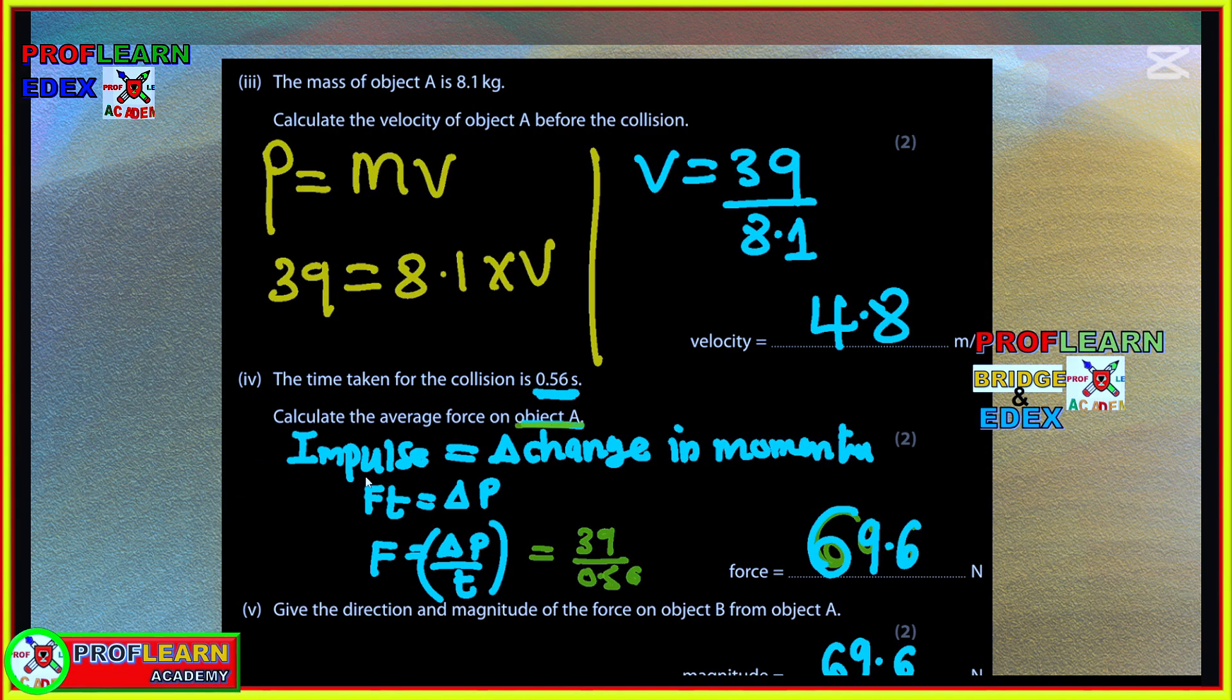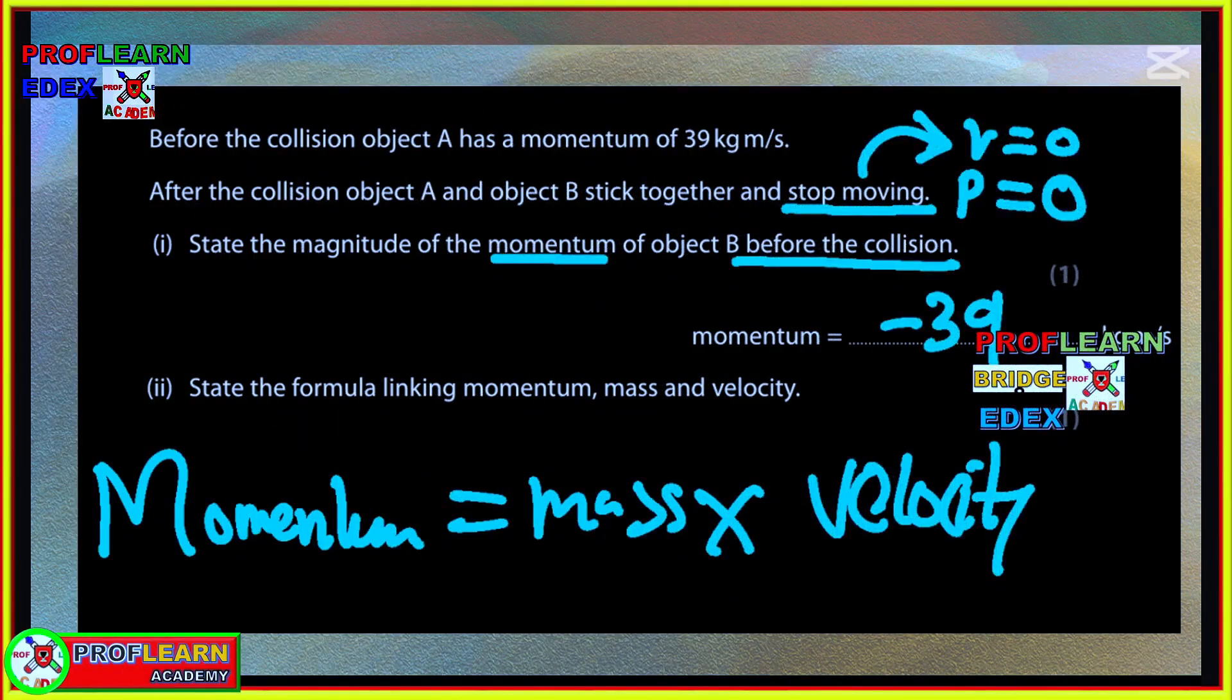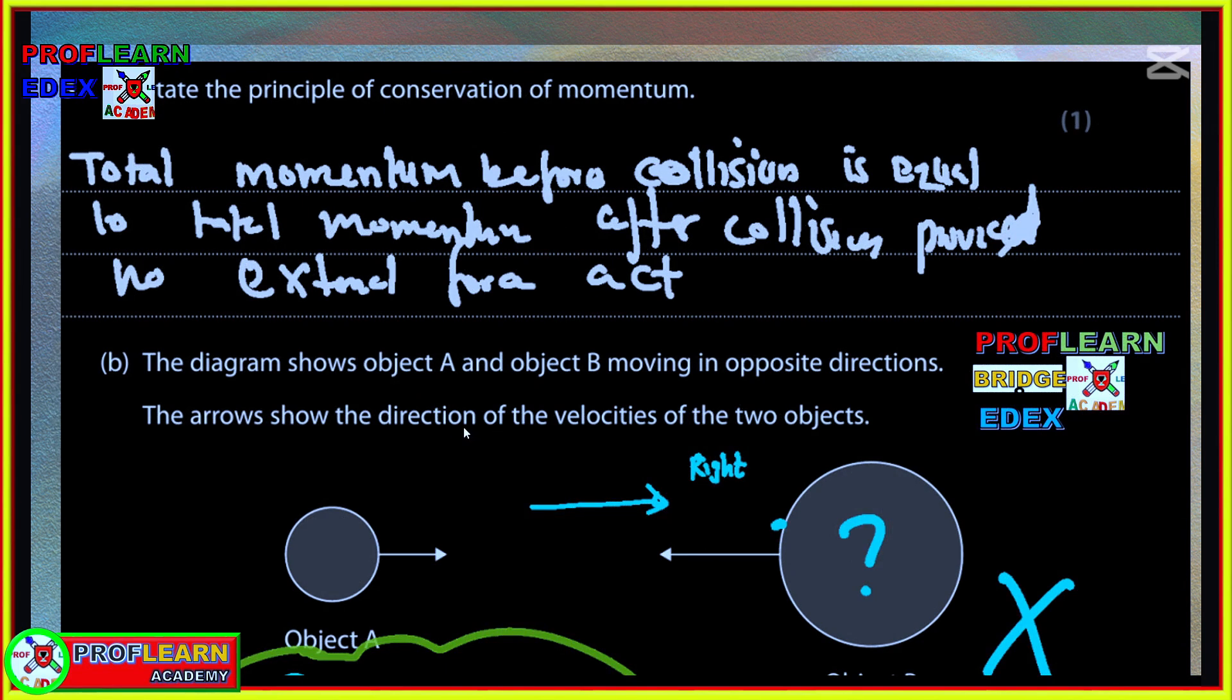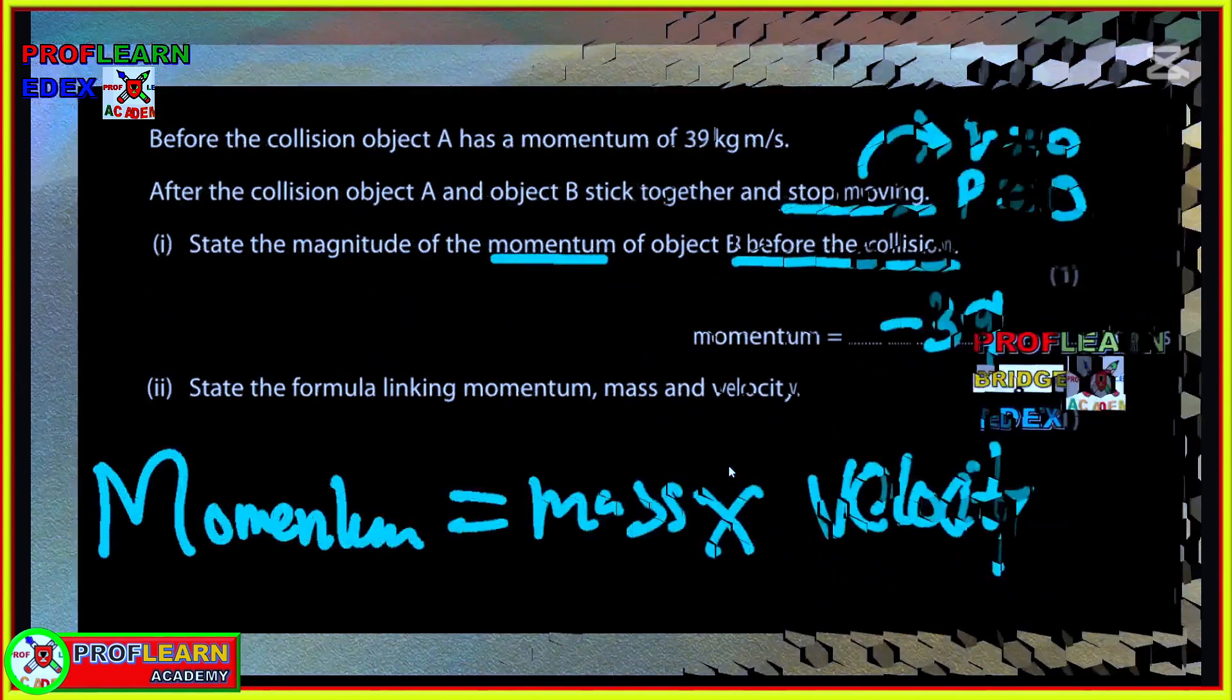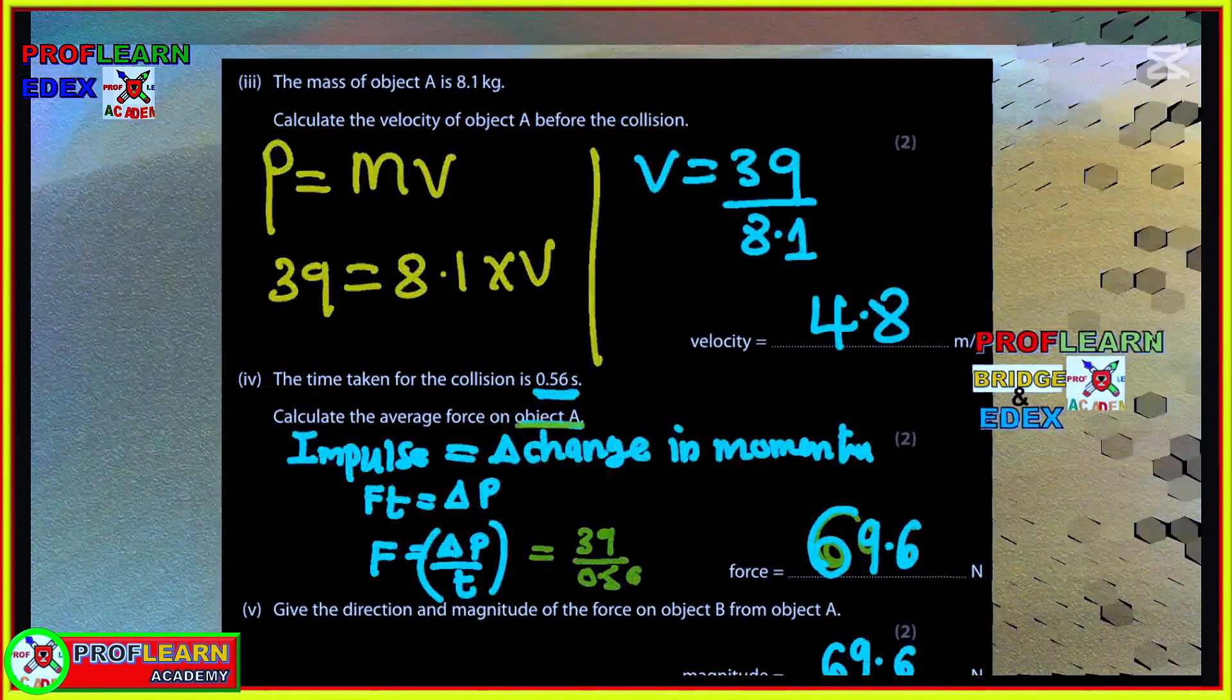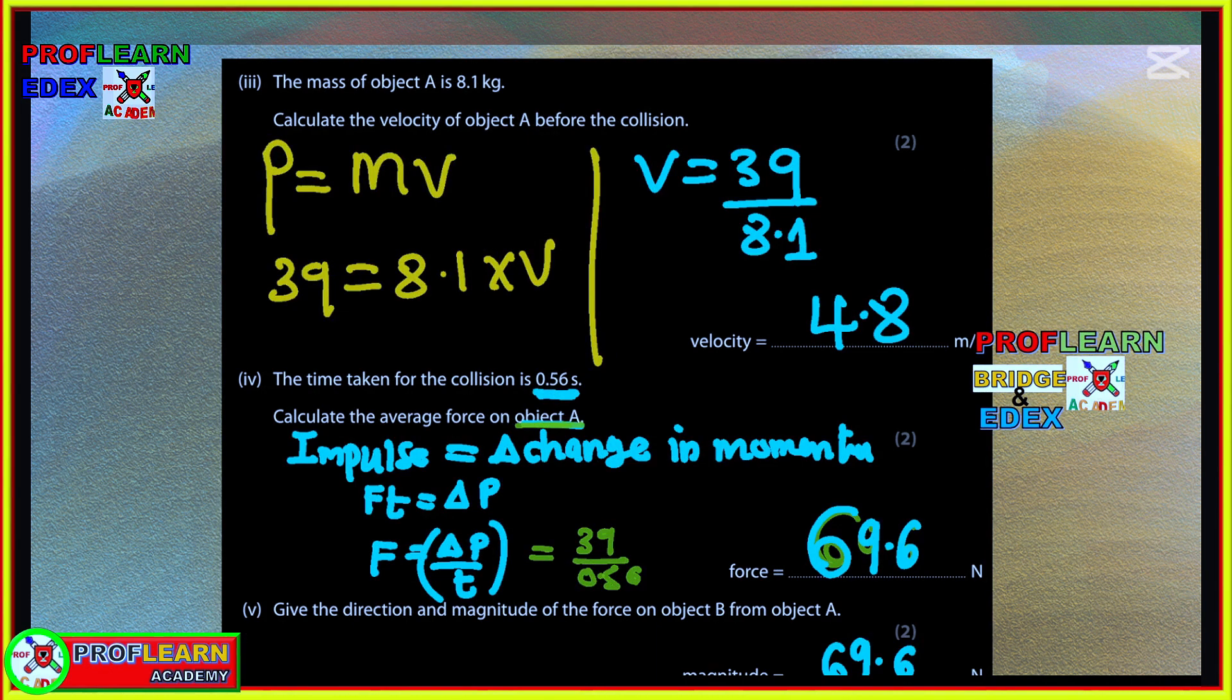Calculate the average force. Something you need to remember: impulse equals the change in momentum. If we are talking about object A, initially before they collided it was having a momentum of 39. After collision its momentum became 0 because the two objects stopped. The change in momentum would be 39. If we know that impulse equals change in momentum, then we divide both sides by time. Change in momentum over time gives us the force, which is 69.6 newtons.